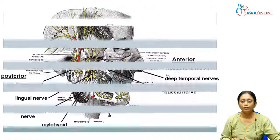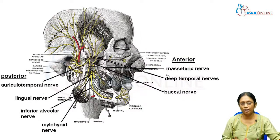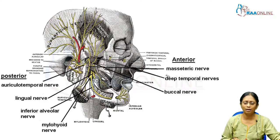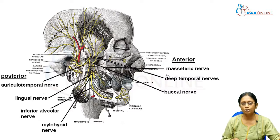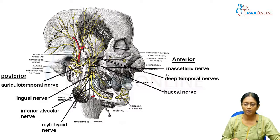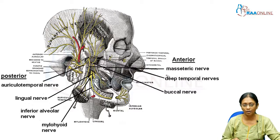When looking at mandibular injection techniques in dentistry and surgery, when local anesthesia is being given, most of the time we will be doing procedures involving either the maxilla or the mandible. If we are working in the mandibular region, we will be looking at anesthetizing the inferior alveolar nerve.